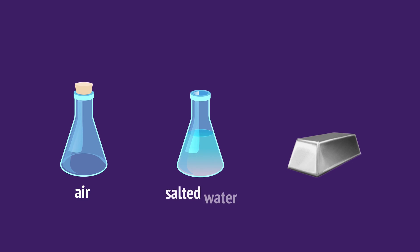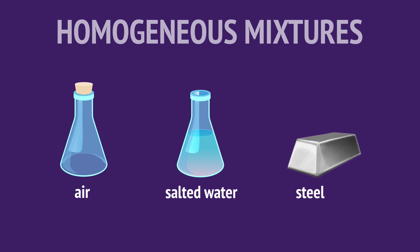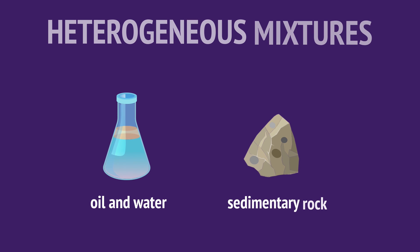Air, salted water, and steel are examples of homogeneous mixtures, where the substances are distributed evenly and every section of the mixture looks the same. Mixtures can also be heterogeneous, where the substances are not distributed evenly and different sections of the mixture look different.